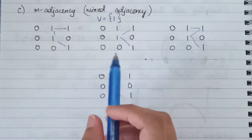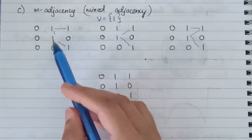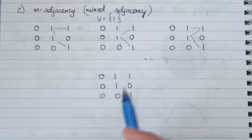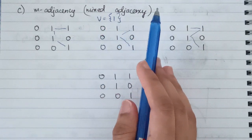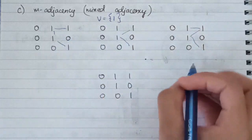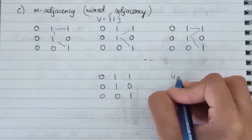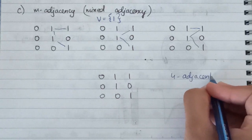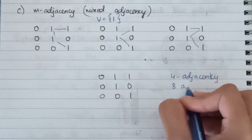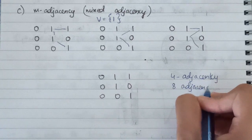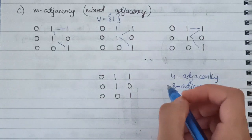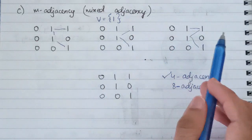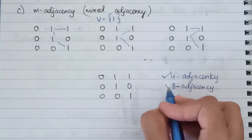When making connections, we need to ensure they are unique — there should be a unique path between all elements. That is where mixed adjacency comes in. The rule is: if two elements can be connected using both four adjacency and eight adjacency, you must give priority to the four adjacency path. If it can be connected using four adjacency, do not connect it using eight adjacency.